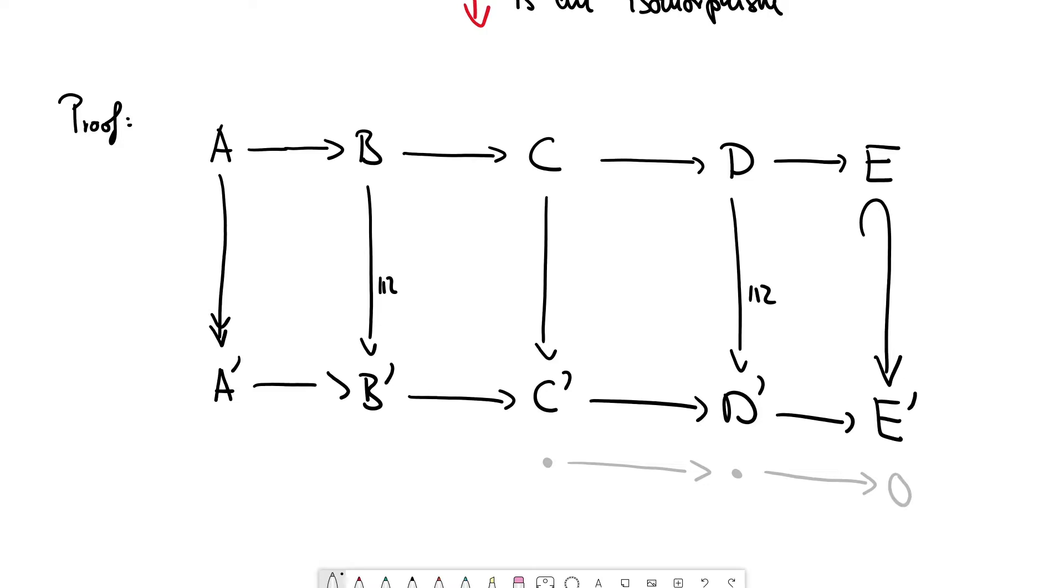The rows are exact, so this element will be moved to the zero element in E prime, because it comes from C prime. We can also look at a pre-image of this element in D. And there's a unique pre-image, because this arrow was an isomorphism.